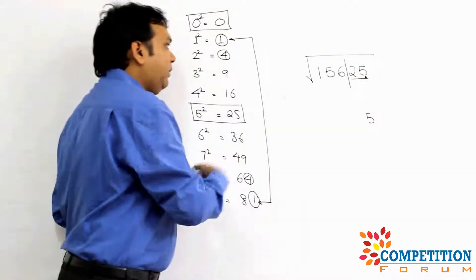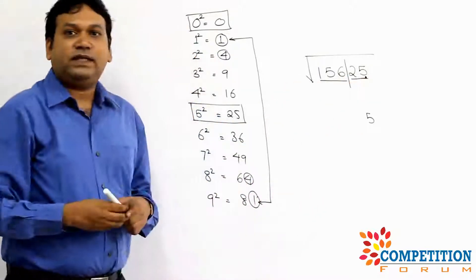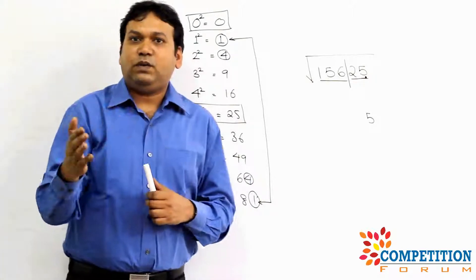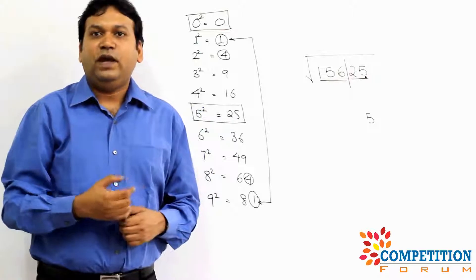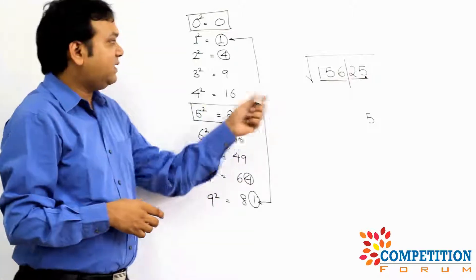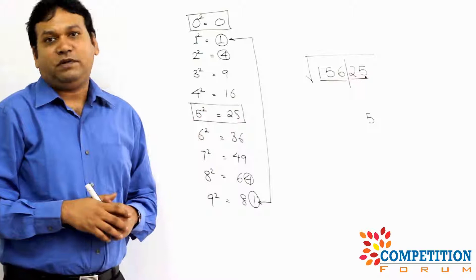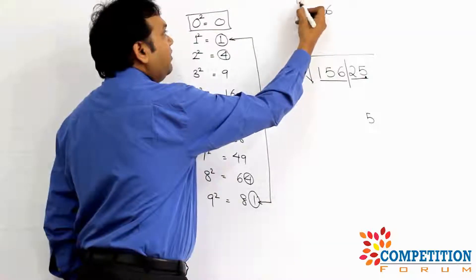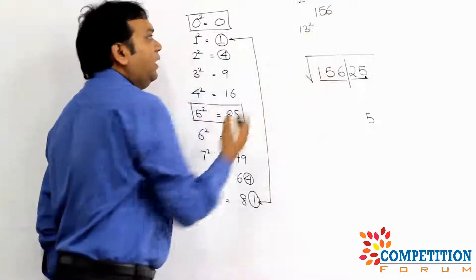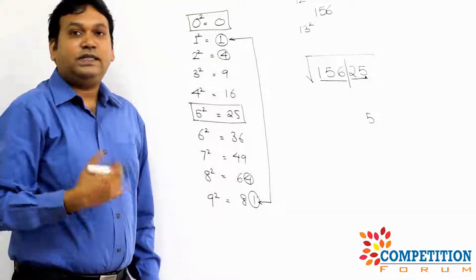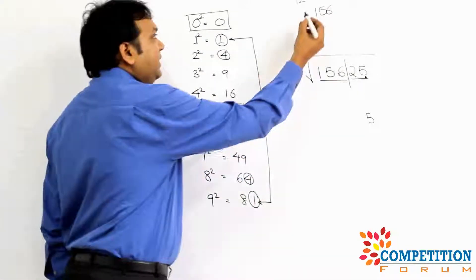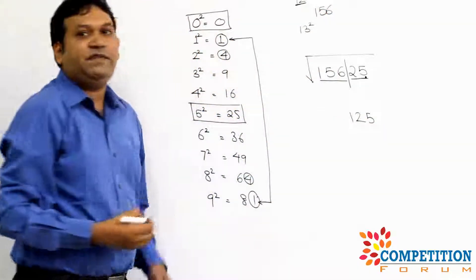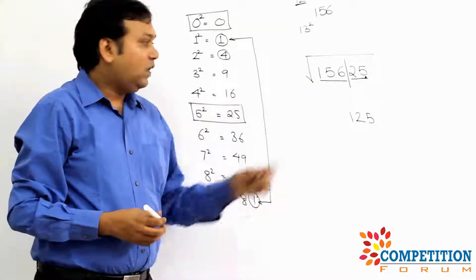Now look at the remaining digits: 1, 5, 6 — the number 156. Is 156 a perfect square? If you know squares up to 20, you know 12² = 144 and 13² = 169, so 156 is between 12² and 13². We always take the lower number, which is 12. So the answer is 125.